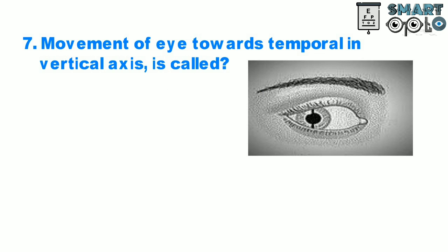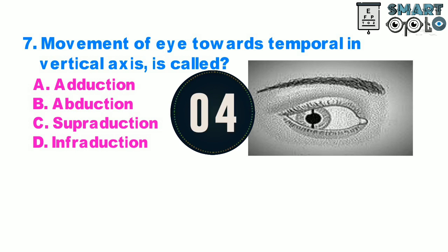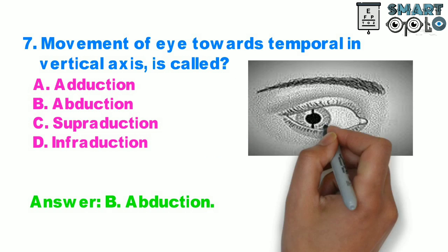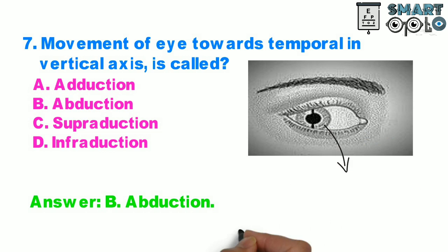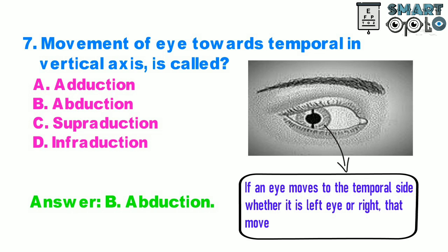Question 7. Movement of the eye towards the temporal side in the vertical axis is called: A. Adduction, B. Abduction, C. Supraduction, D. Infraduction. If an eye moves to the temporal side, whether it is the left eye or right, that movement is called Abduction.